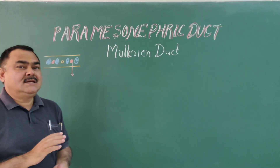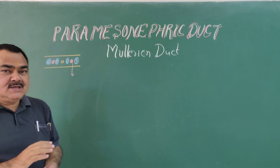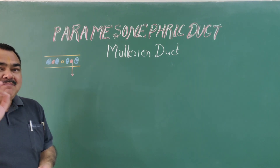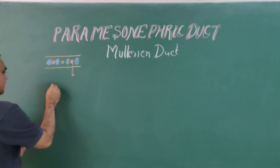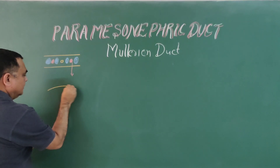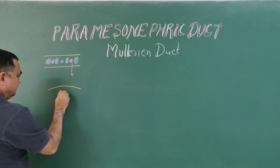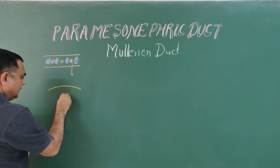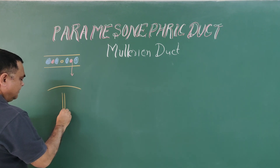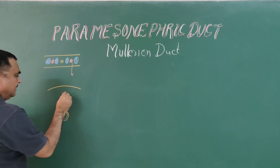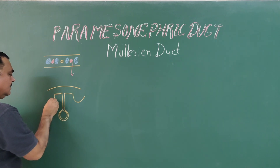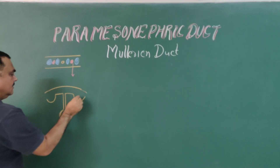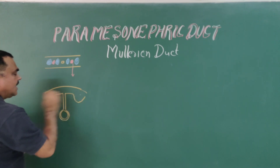In the nephrogenic cord, gonads, excretory tubules, mesonephric duct, and paramesonephric duct develop. Here you can see the developing gut, this is the mesentery, and here is the portion of the nephrogenic cord.